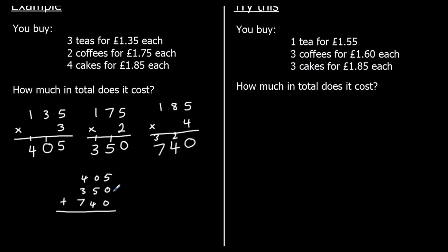Adding up: 5 plus 0 plus 0 is 5. 0 plus 5 plus 4 is 9. And 4 plus 3 plus 7 is 14. So that's 1,495p, or £14.95.